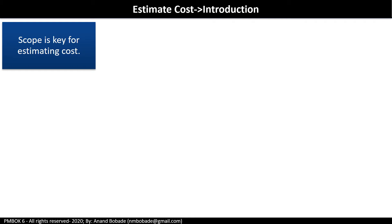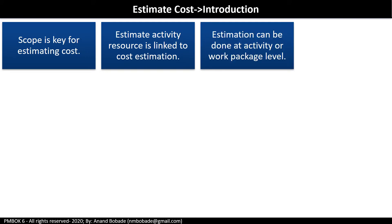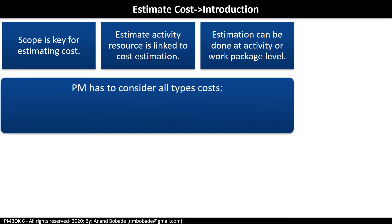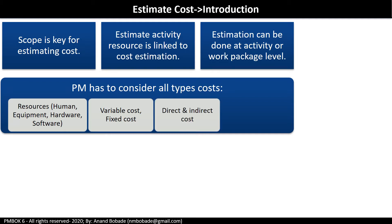Scope is key for estimating cost. Scope is translated into action in the form of activities, done in the define activities and sequence activities processes in schedule management. This is the starting point for the estimate cost process, whose main purpose is to take activities from the activity list and estimate their individual cost. Estimate activity resources links to cost estimation as the type and quantity of resources is a key input. Estimation can be done at the activity level or at the work package level. The project manager has to consider all types of cost, including resource costs — human resources, equipment, hardware, software — variable or fixed cost.